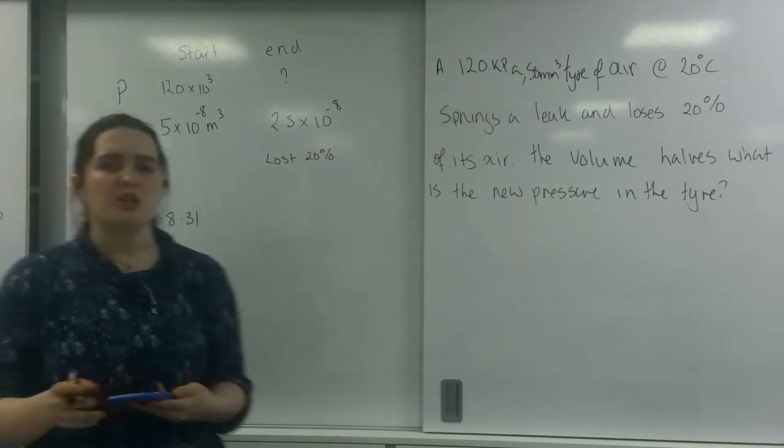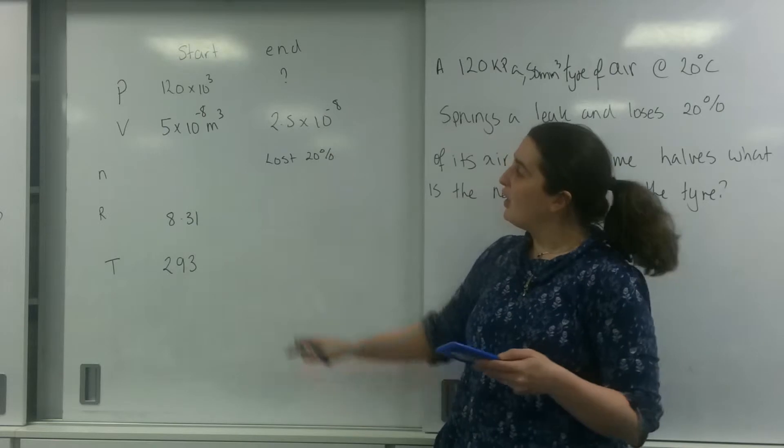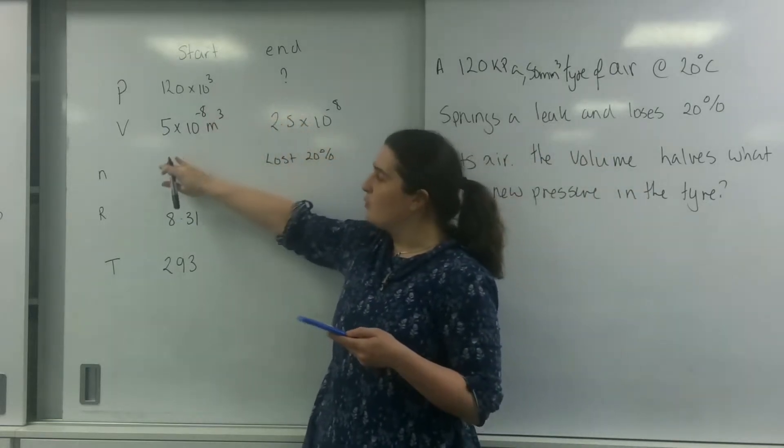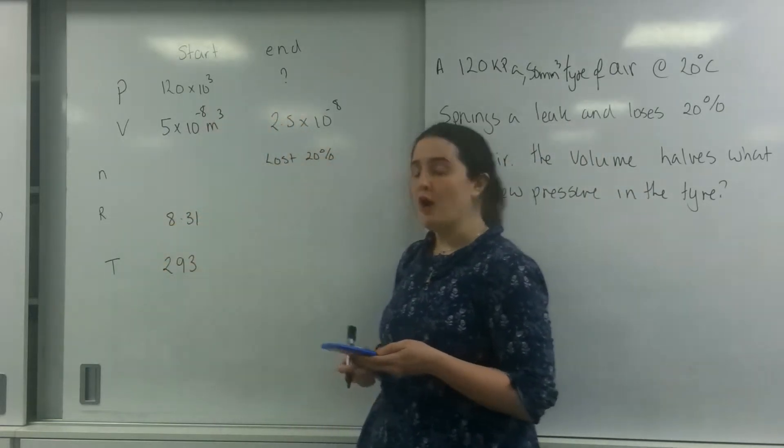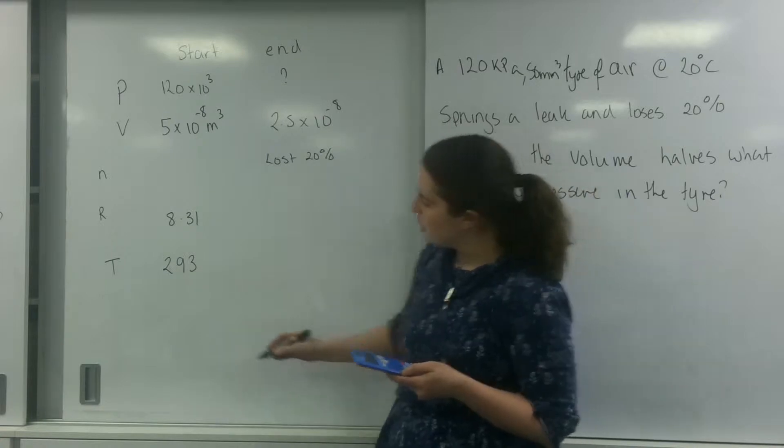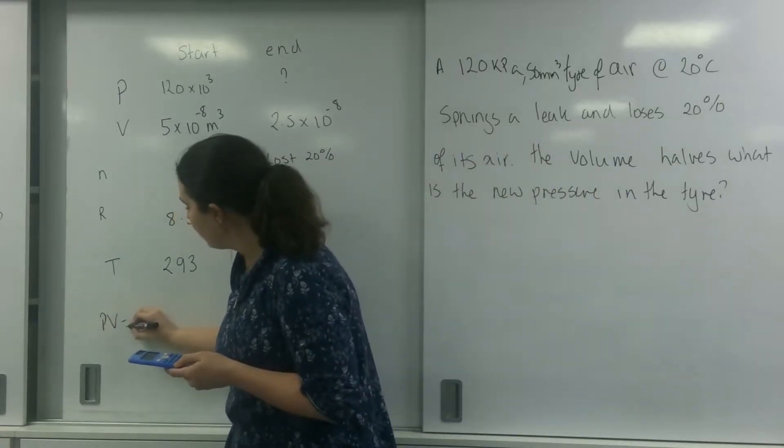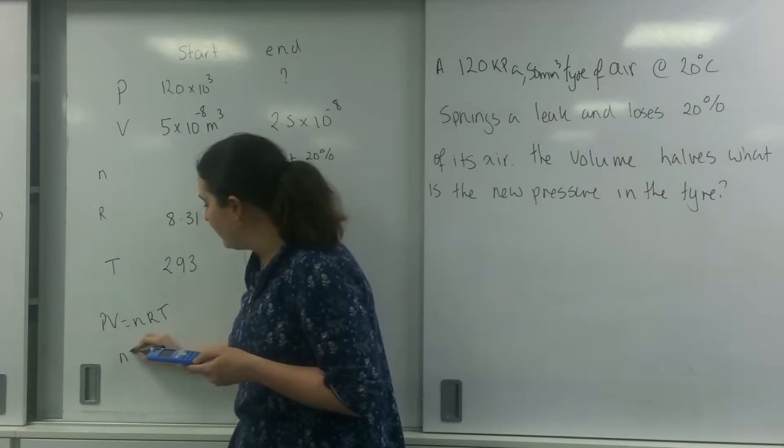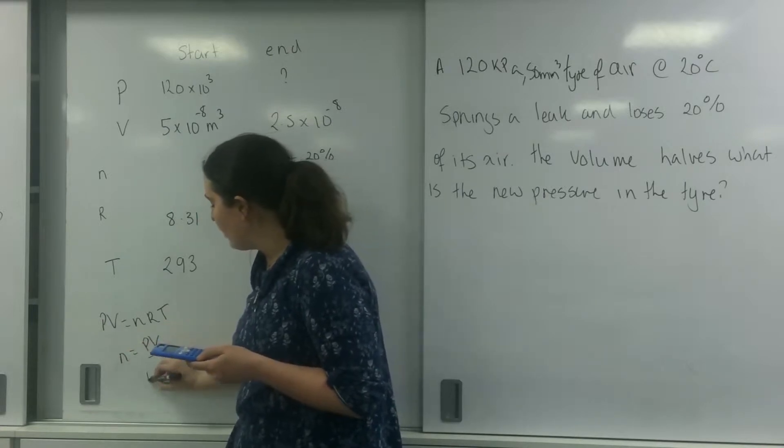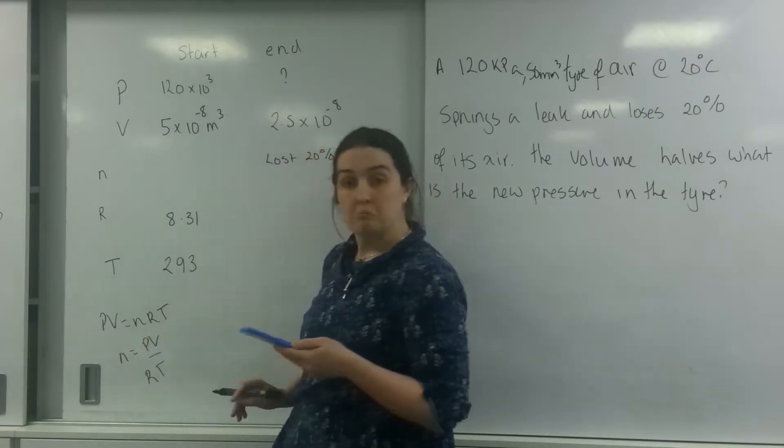So this is telling me that it's lost 20%. So what I'm going to do is I need to find out how many I had here, and I'm going to use my PV equals nRT to work it out. So PV equals nRT, so n is PV over RT. So that's what I'm going to do.